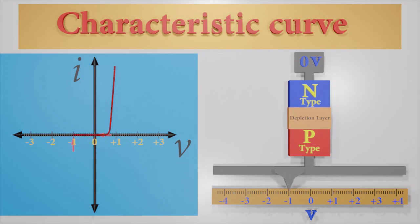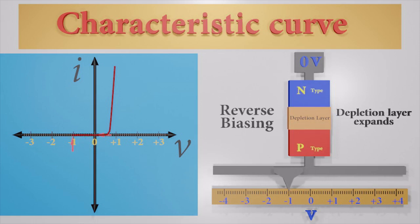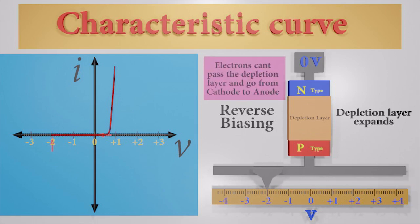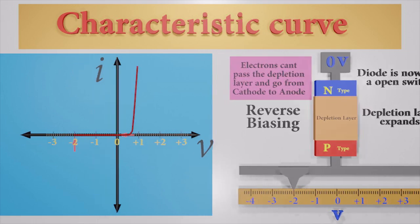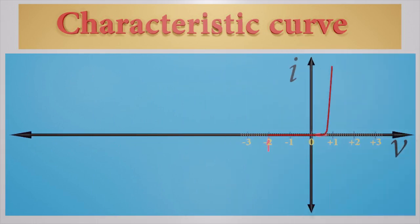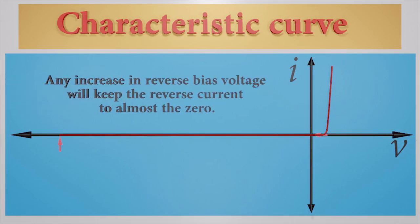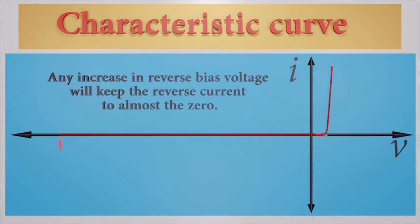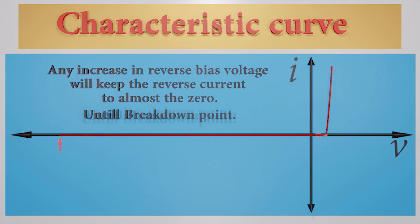What happens to the diode if we decrease the voltage of the p-end? See, nothing. The diode is now reverse biased. The depletion layer expands with the decreasing of the voltage. This blocks the current flow. We can't see any increase in reverse bias voltage. It will keep the reverse current to almost zero until it goes to the breakdown point. This is the maximum reverse voltage that the diode can handle.